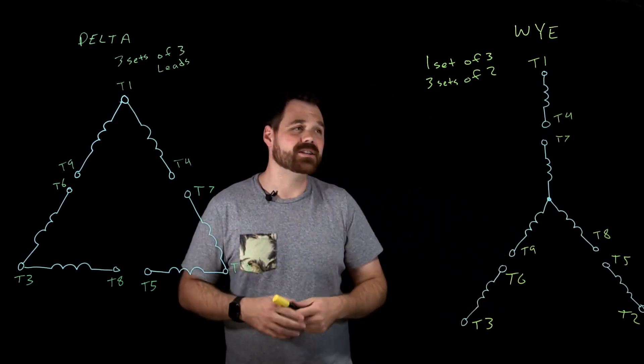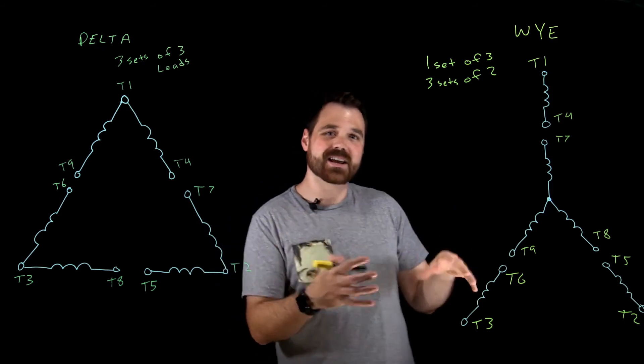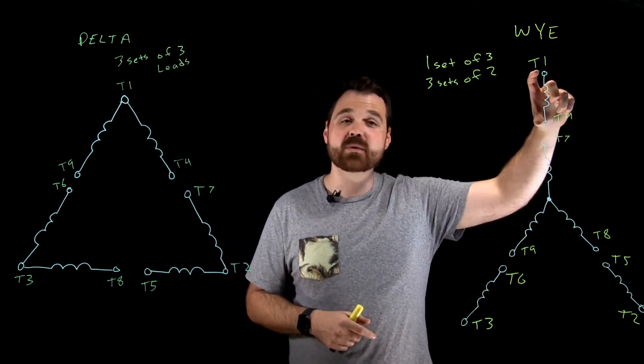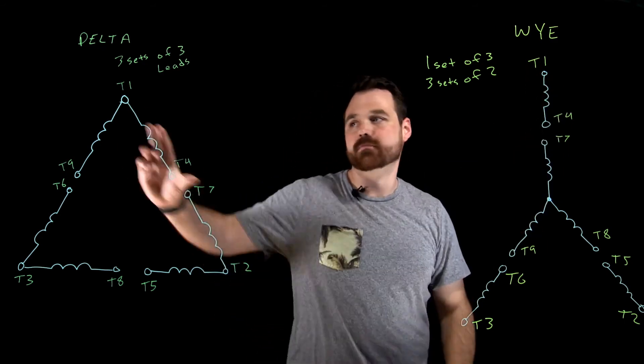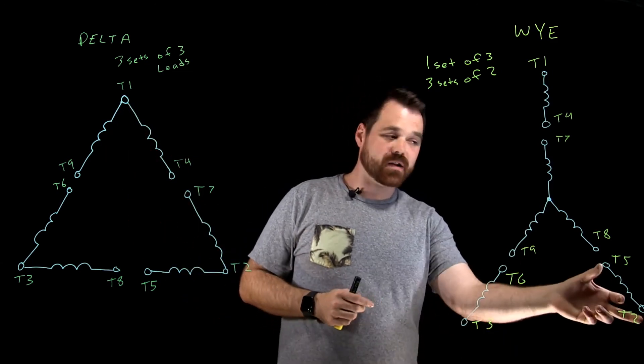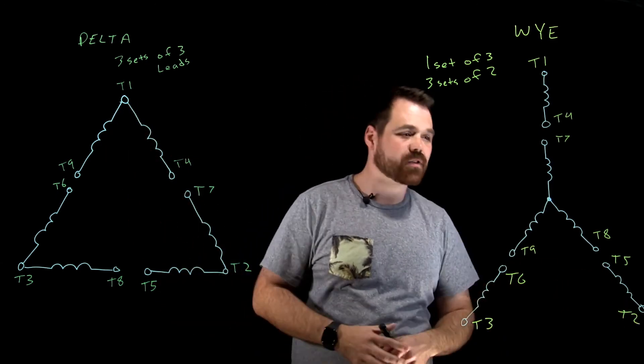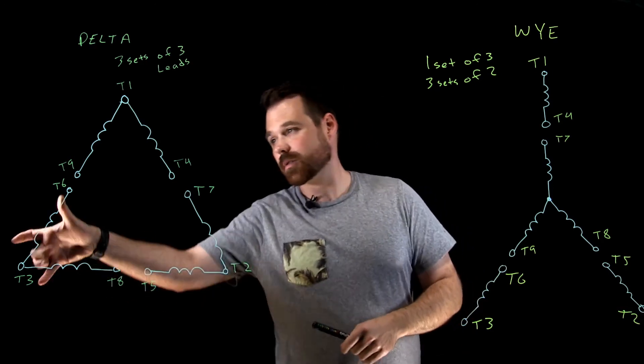Now you'll notice some similarities here. It's because it's really the same windings inside that motor. T1 and T4 make up a winding. T1 and T4 make up a winding. But two and five, two and five, right? Three and six, three and six.